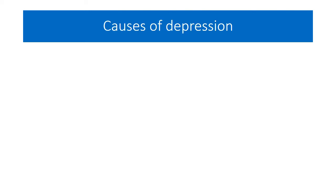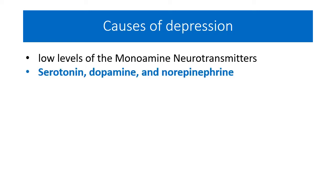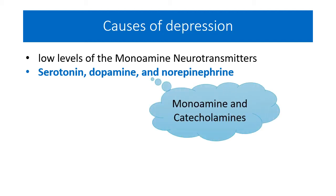Now, the causes of depression. Depression is caused by low levels of monoamine neurotransmitters in the brain. These are serotonin, dopamine, and norepinephrine — that is noradrenaline. They are monoamines and catecholamines.